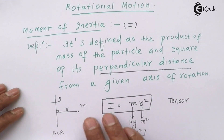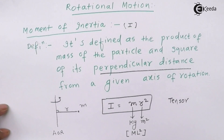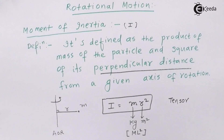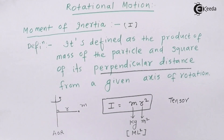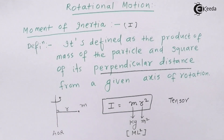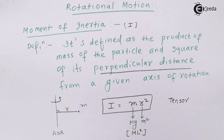This formula I = mr² is valid for a point mass. If the mass is not a point mass but an extended object, then we have to take the help of calculus to find the moment of inertia of a given object about a given axis.